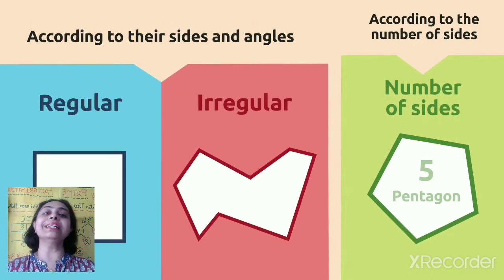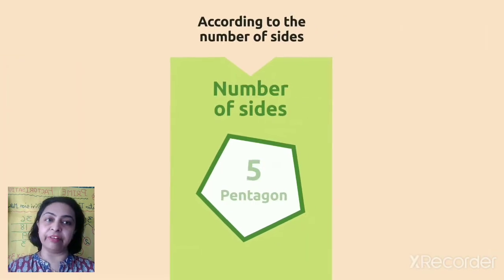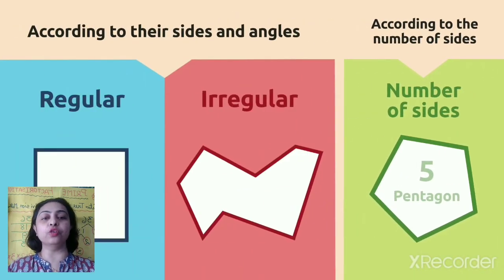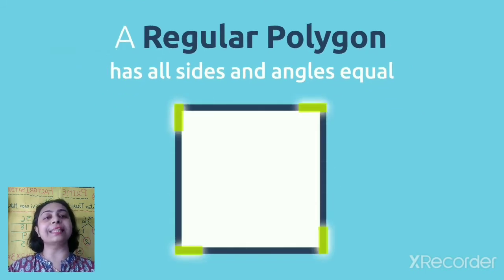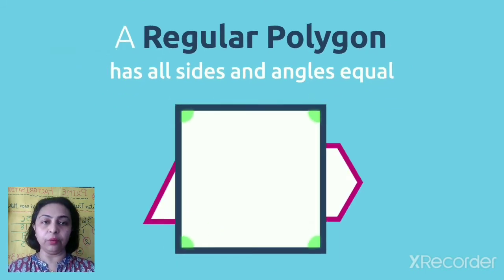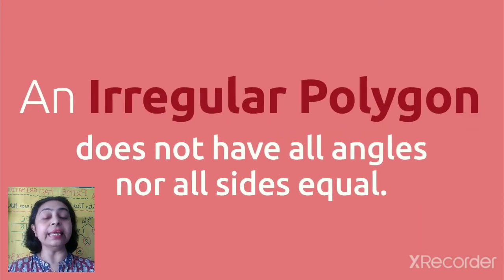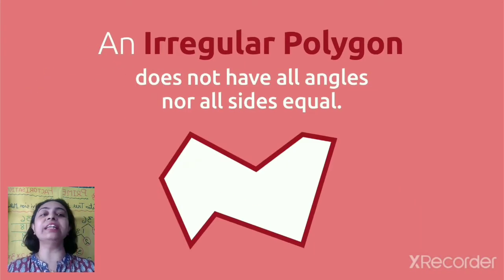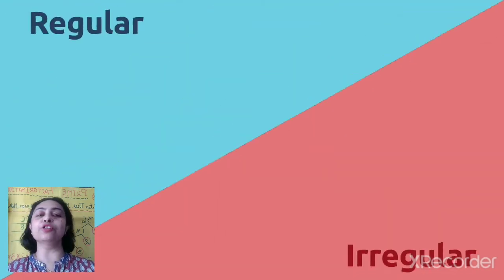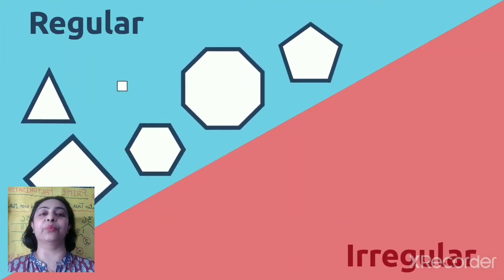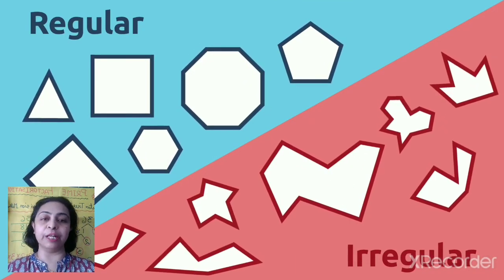According to their sides and angles, there are types of polygons. Regular polygons have all sides and angles equal - like square, triangle, hexagon. An irregular polygon does not have all angles nor all sides equal. So regular and irregular, there are different types of shapes you can see here.